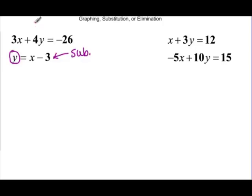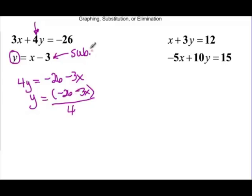but we'd have to use our shortcut. And then when we divide by 4 to put it in our calculator, remember it's negative 26 minus 3x all over 4. So that's a little harder. Substitution is probably the easiest way to solve this one.